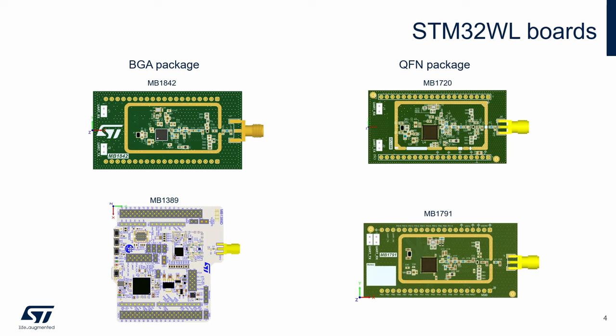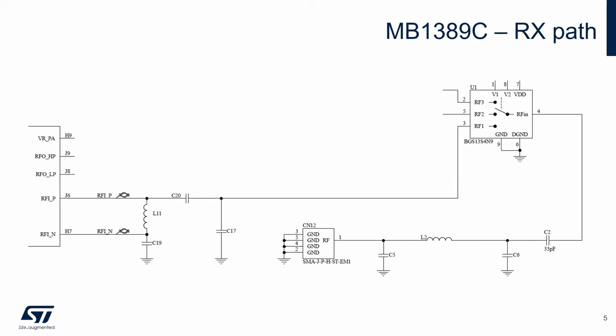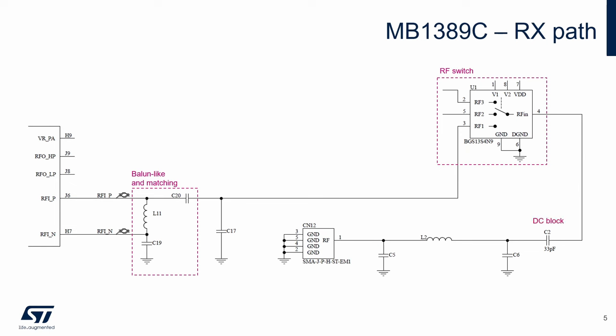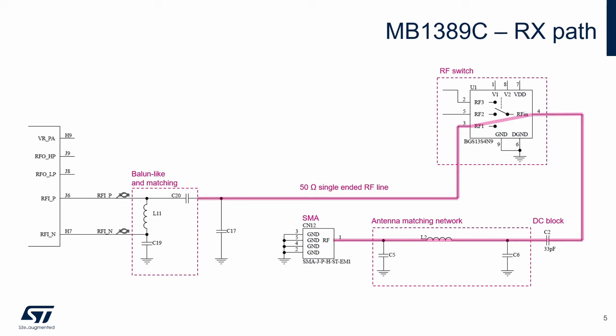In this example, we use the STM32WL Nucleo board. Here is the schematic of the receiver part of the STM32WL Nucleo board. We can see the balun-like and matching network, the RF switch, the DC block, the antenna matching network, and the SMA connector. The balun-like circuit transforms the single-ended signal to differential.